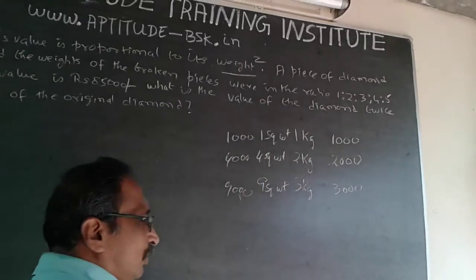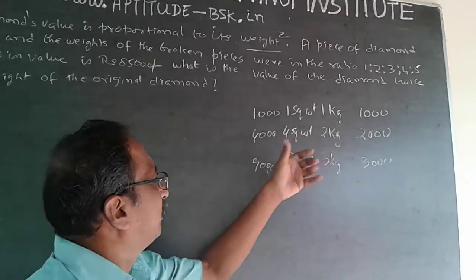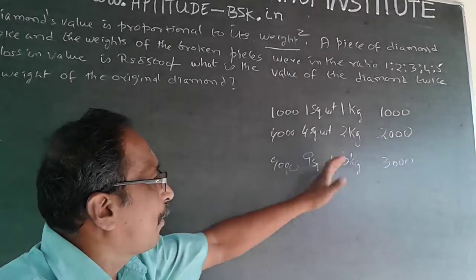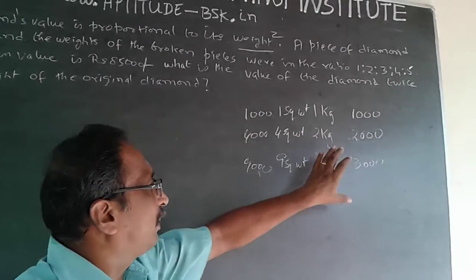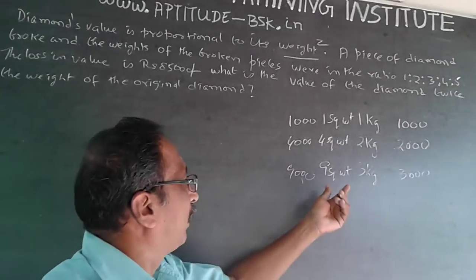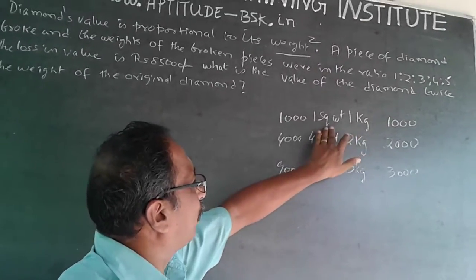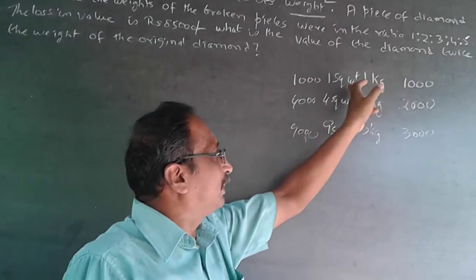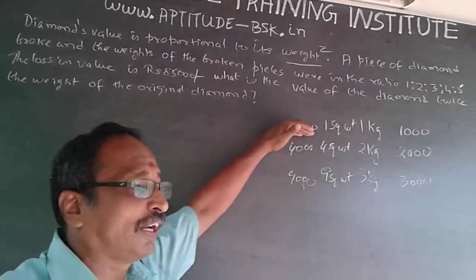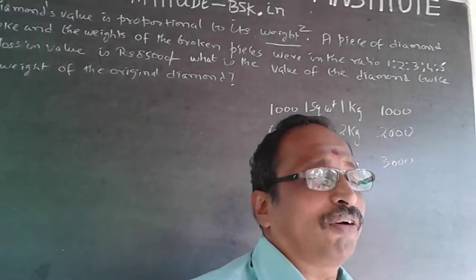Now supposing the 3 kg weight is broken into 3 pieces of 1 kg each: the value of 9000 will become 3 into 1000, which is 3000. Because bigger the weight, the square weight is very big; lesser the weight, the square weight is less. So 3 kg squared is 9 square units, but 3 pieces of 1 kg give only 3 square units — value reduces from 9000 to 3000. That is what is happening to our diamonds.